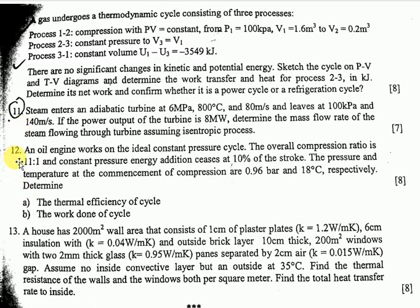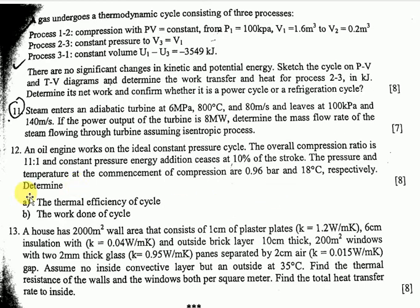Question number twelve: an engine works on the ideal constant pressure cycle. The overall compression ratio is 11:1 and constant pressure energy addition occurs at 10% of the stroke. The pressure and temperature at the commencement of compression are 0.96 bar and 18 degrees Celsius respectively. Determine the thermal efficiency of the cycle and the work done — this is an 8-mark question from Chapter 6, thermodynamic cycles.